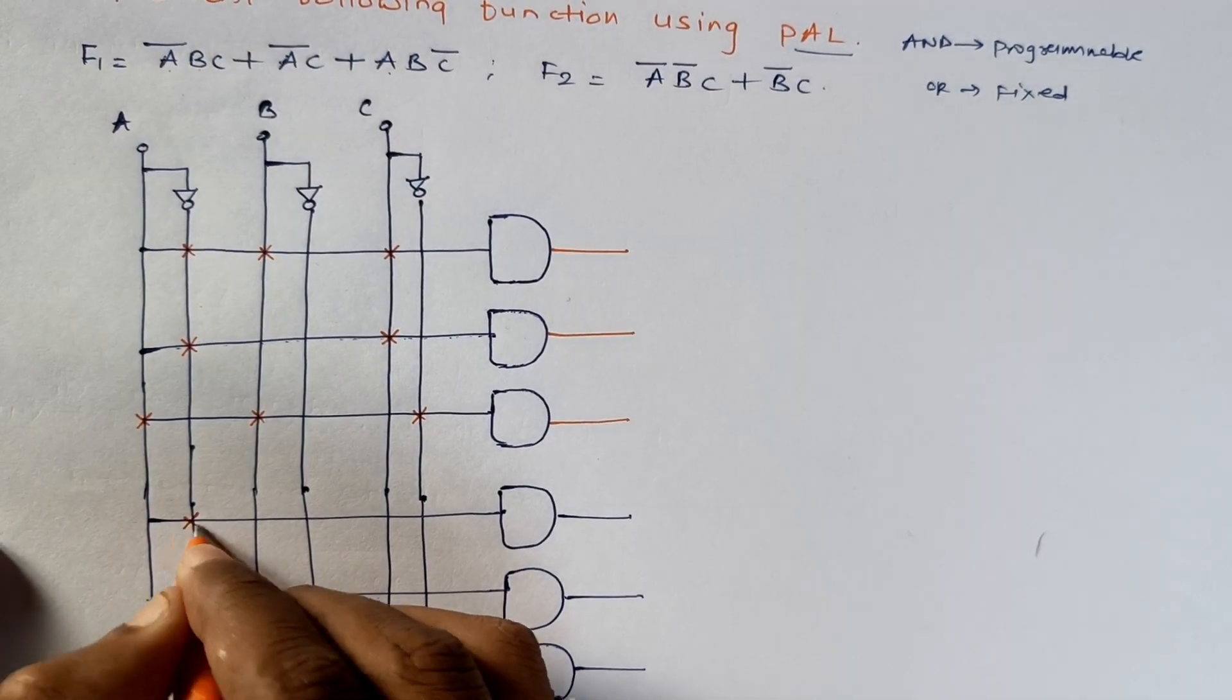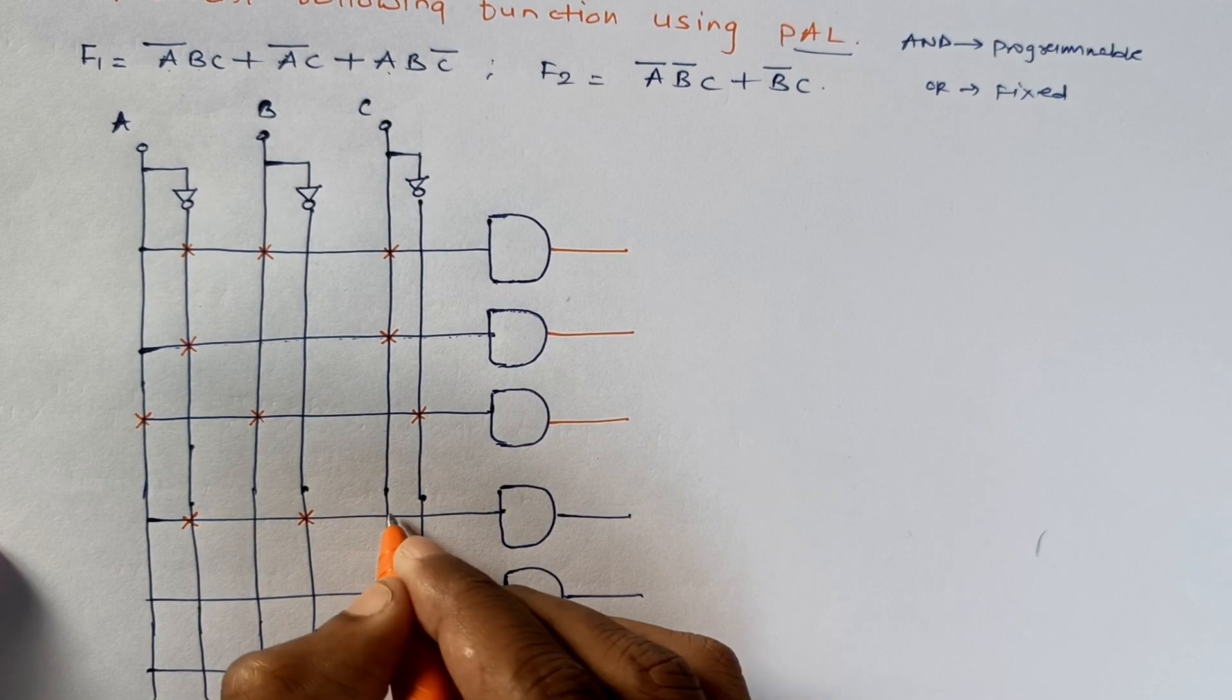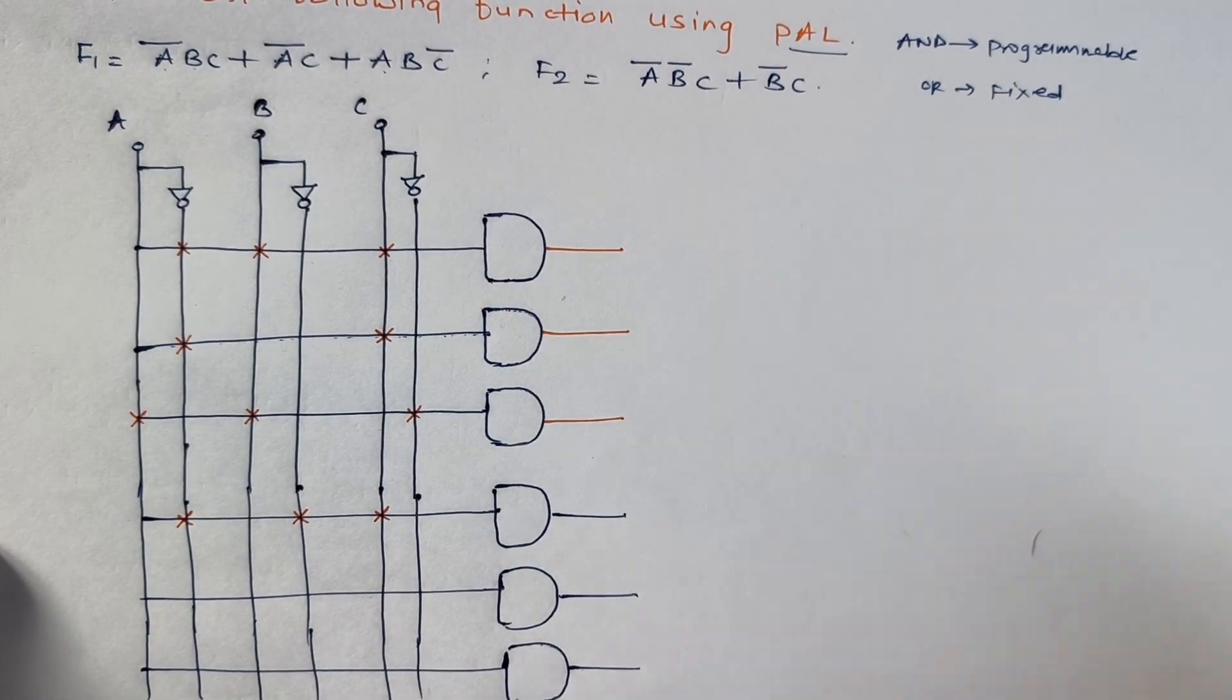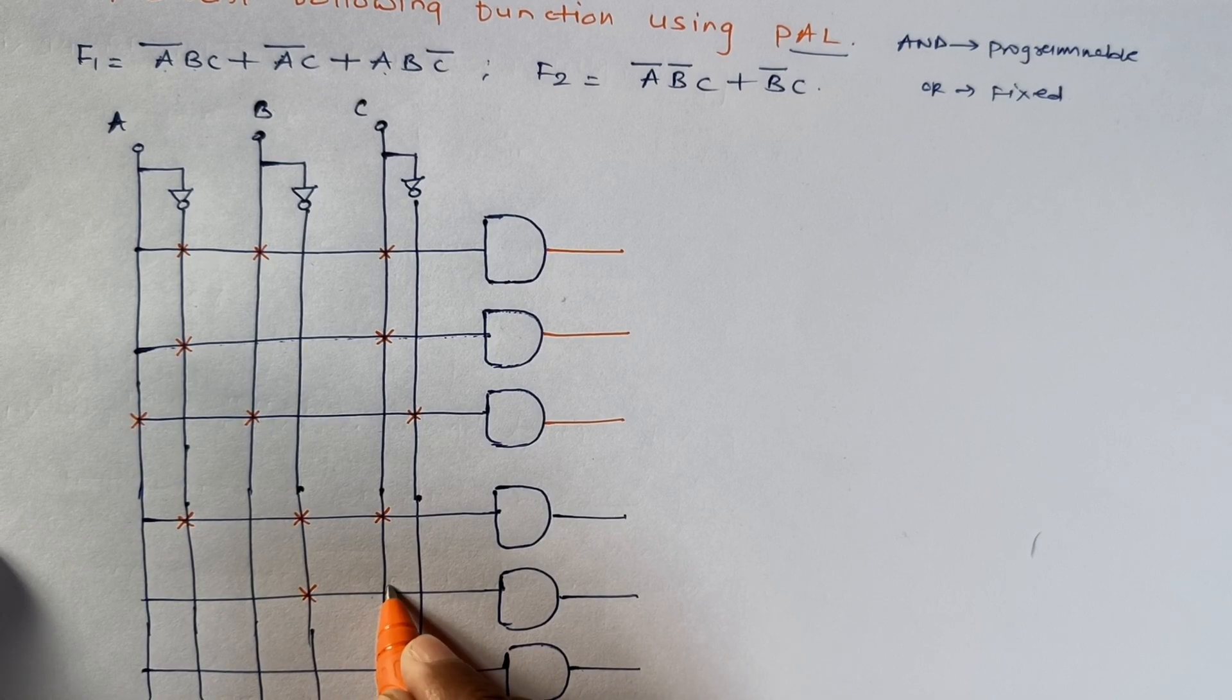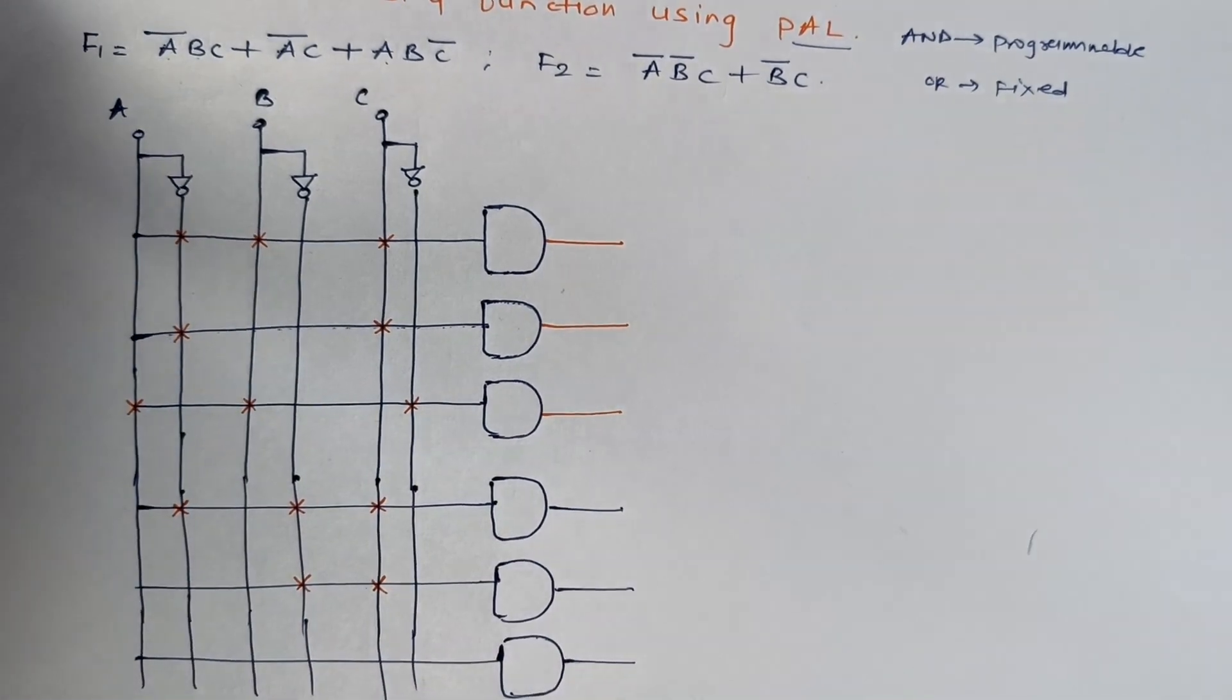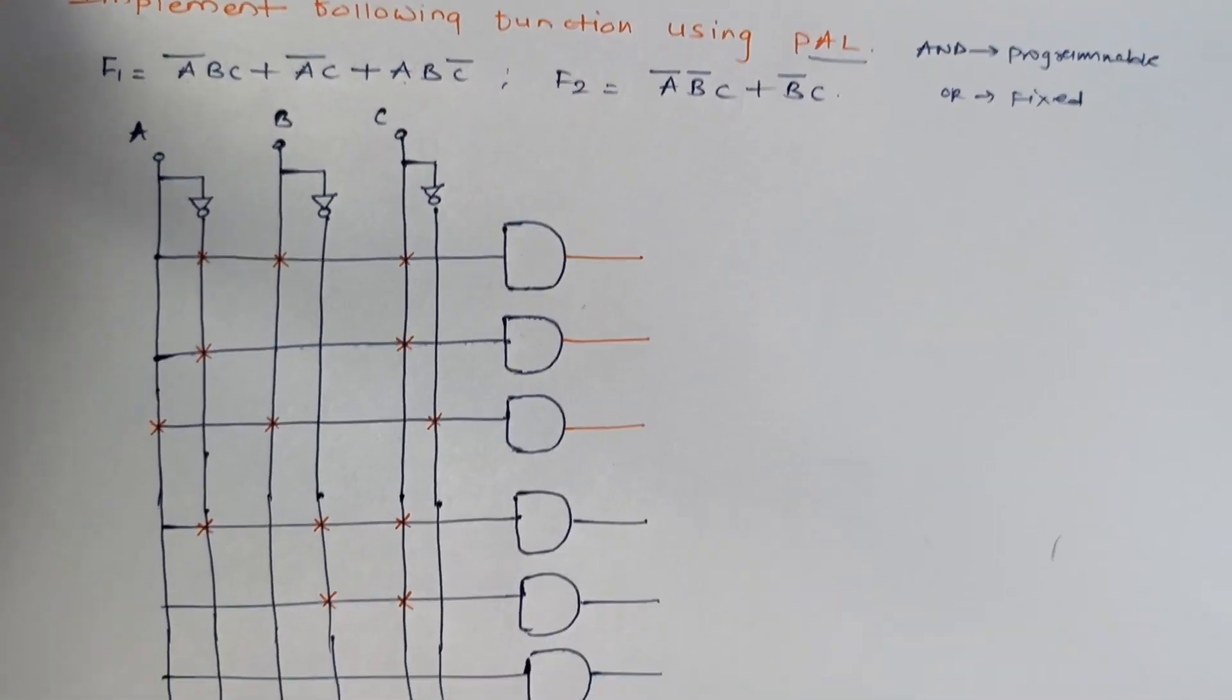Here we have A bar C, so we will take A bar B bar C. Similarly, we have B bar times C. This is B bar and this one is C. Here we will take A bar C in general.